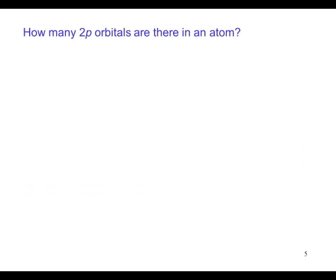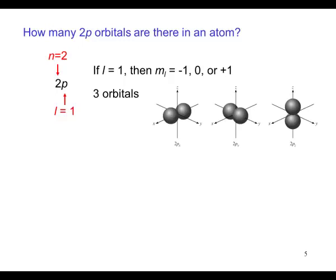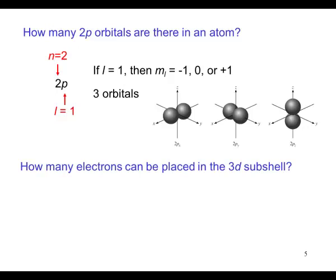How many 2p orbitals are there in an atom? 2p represents n equal two and l equal one. If l equals one, then m sub l equals minus one, zero, or plus one. That's three orbitals or the three p orbitals.